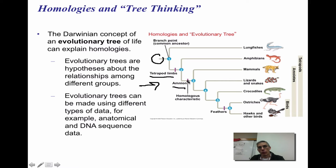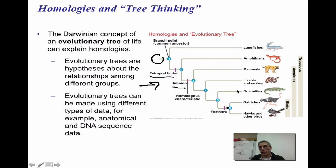Those that have the amnion at this point in the evolutionary tree include mammals, lizards, snakes, crocodiles, ostriches, and other birds, but not amphibians and not lungfish. Down here at the bottom, feathers are another characteristic not found in those earlier groups but found in ostriches and various other birds. Evolutionary trees can be made using different types of data — anatomical evidence, DNA sequencing data — lots of different forms of evidence to create what you see on the right.